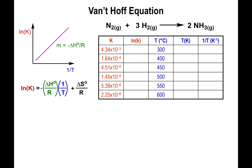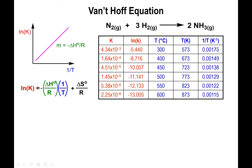Another approach uses a table of multiple equilibrium constants at various temperatures. You take the natural log of K, convert temperatures to Kelvin, then calculate 1/T. I recommend doing all of this in Excel rather than by hand — it will save a lot of time. Then you plot ln(K) versus inverse temperature.